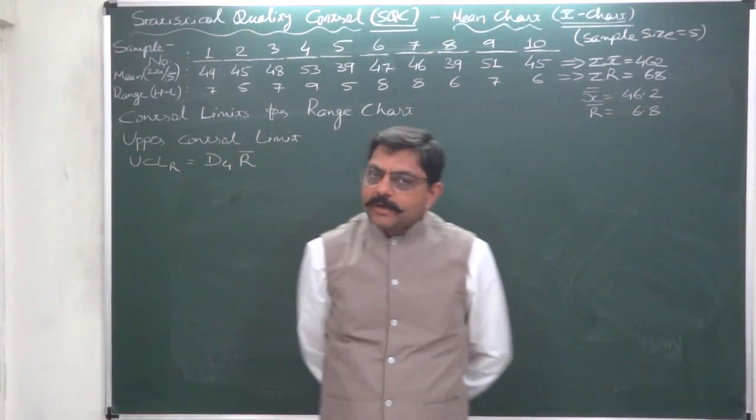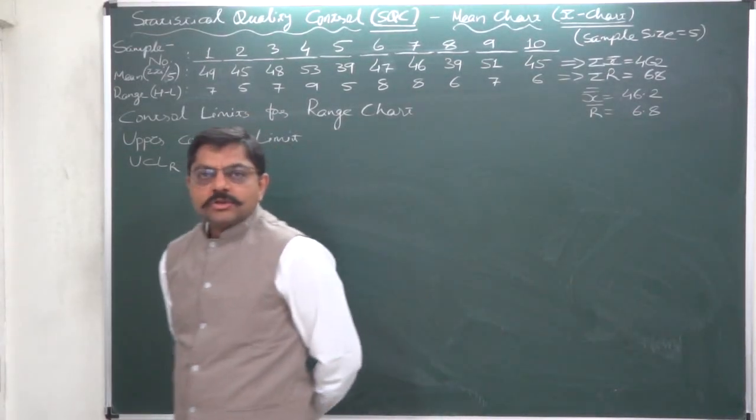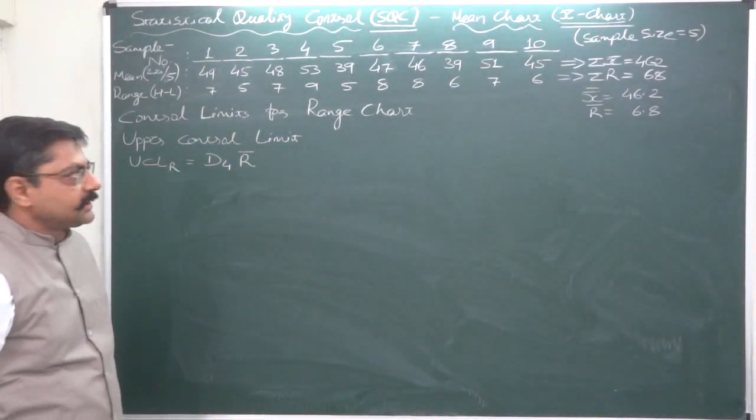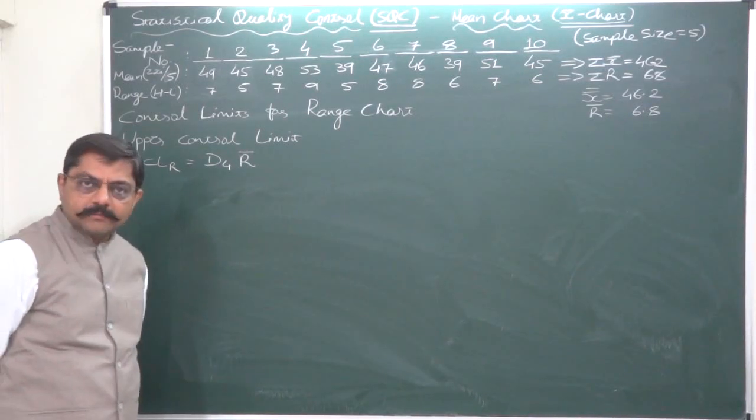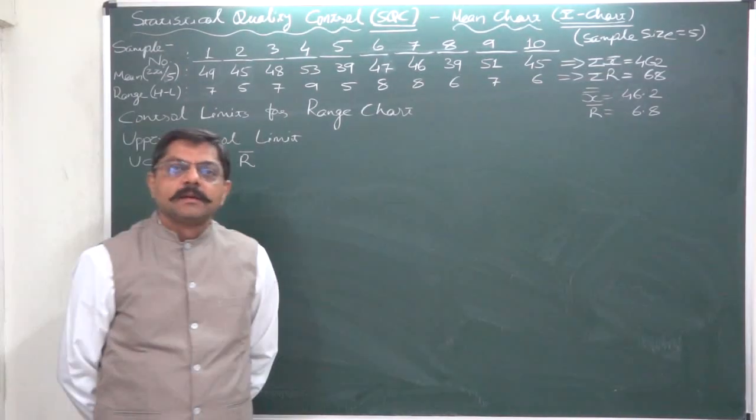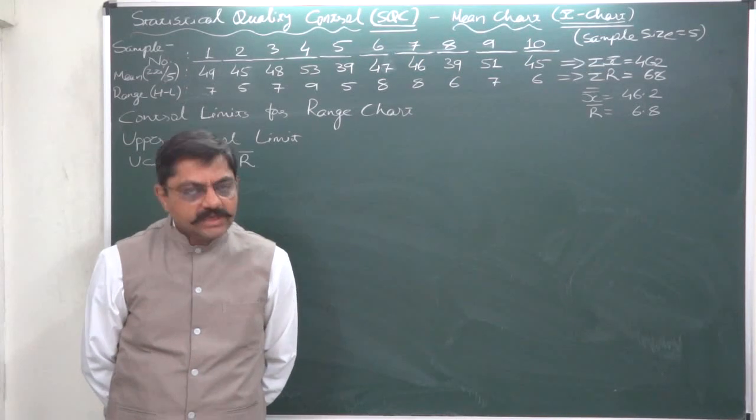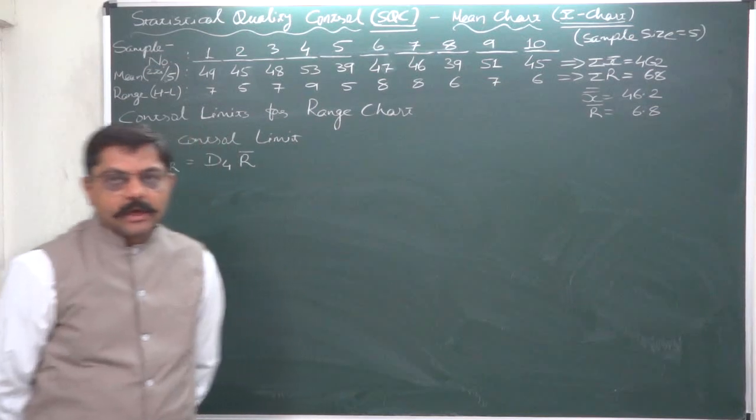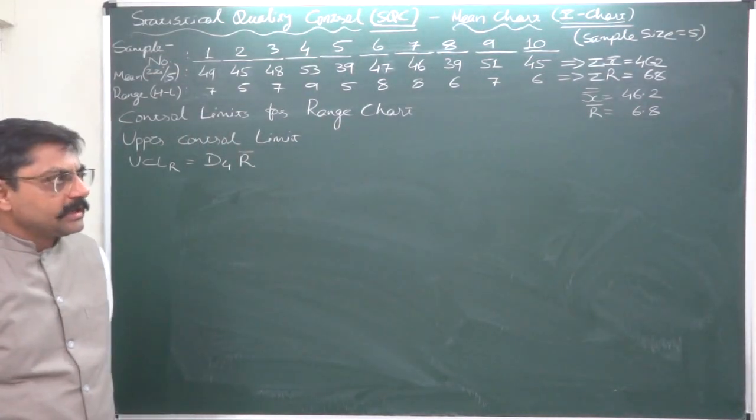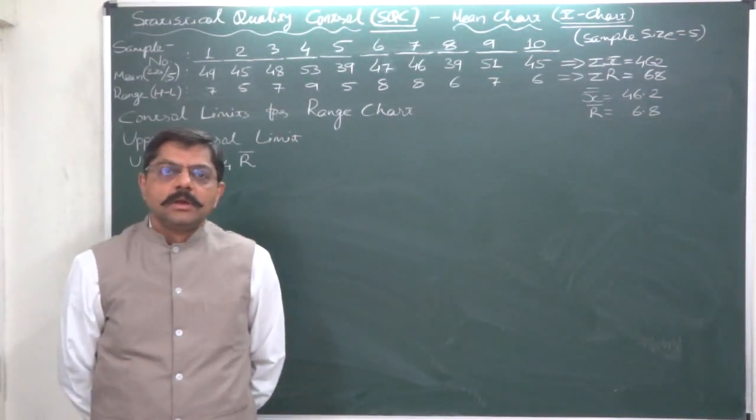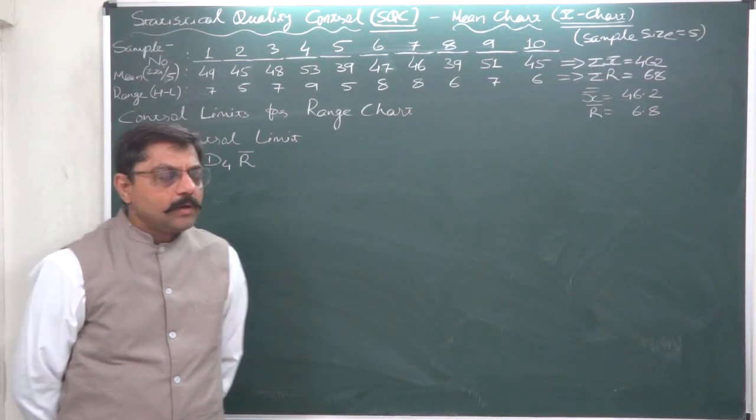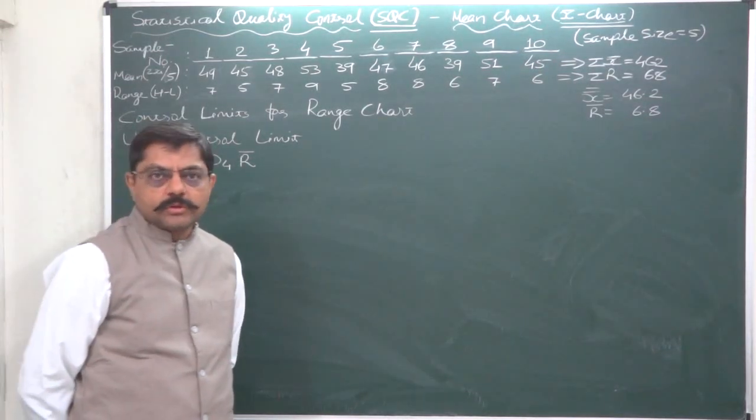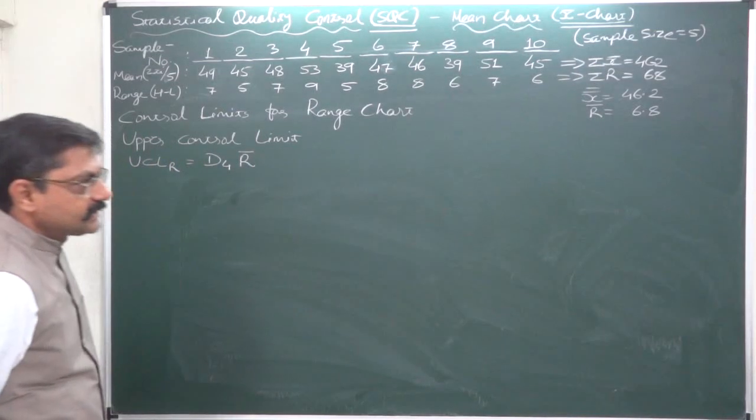Hello, welcome back to part 2 of the solution of the first statistical quality control problem. We are discussing how to draw mean chart and range chart. In the previous lecture we discussed how to calculate the control limits of a mean chart, how to draw a mean chart, and how to draw the conclusion. Now let's discuss how to draw a range chart for the same problem.